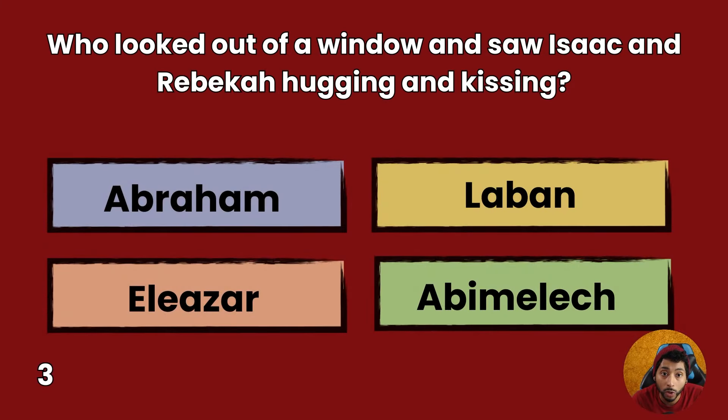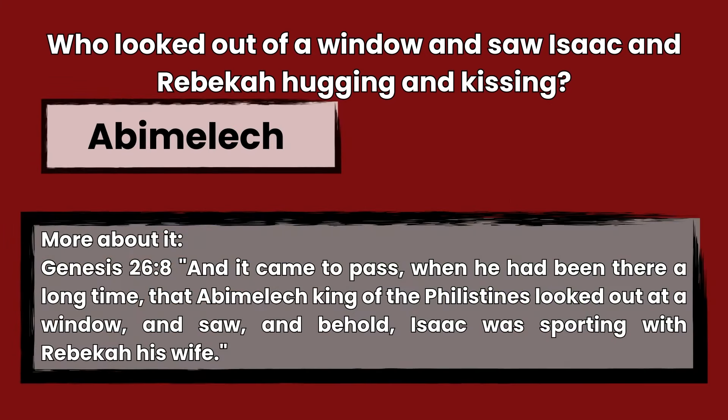Question 3: Who looked out of a window and saw Isaac and Rebekah hugging and kissing? Abraham, Laban, Eleazar, or Abimelech? Answer: Abimelech. Genesis 26:8 — And it came to pass when he had been there a long time that Abimelech king of the Philistines looked out at a window and saw, and behold, Isaac was sporting with Rebekah his wife.